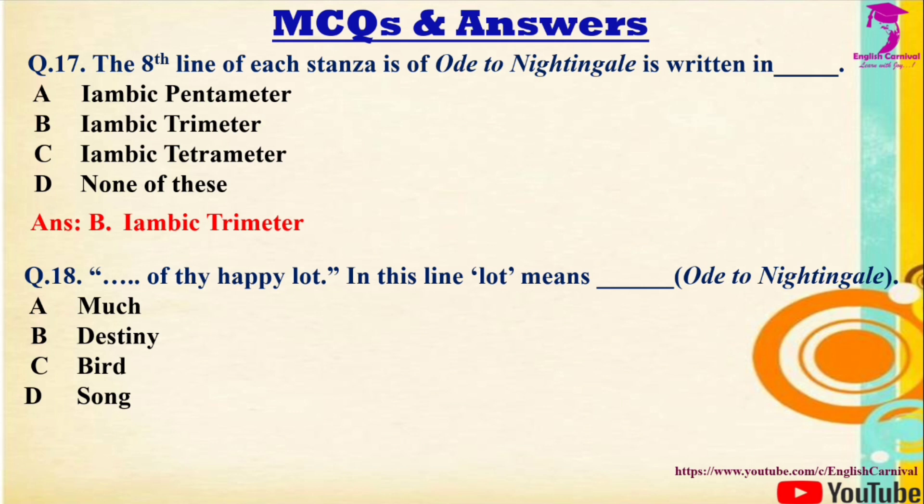Question 18: 'Of the happy lot' — in this line, 'lot' means — Options: A) Much, B) Destiny, C) Bird, D) Song. The correct answer is D — Song.